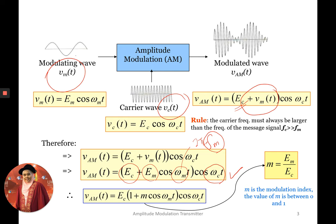When we expand this equation, we can simplify it to a new equation where M is the amplitude of the modulating signal divided by the amplitude of the carrier signal. This M is called the modulation index and the value of M is between 0 and 1, where the minimum value is 0 and the ideal maximum value is 1.